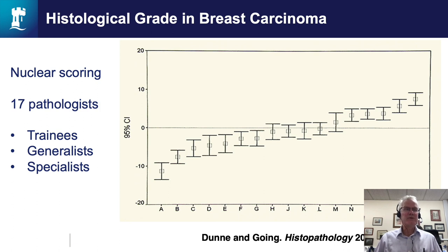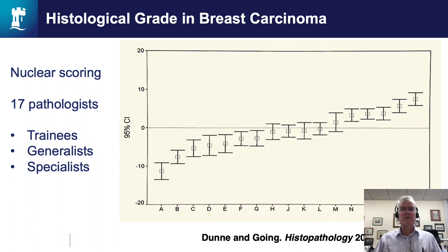A breast pathologist in Glasgow, James Goeing, carried out a study looking at whether there were differences between pathologists in the allocation of nuclear grade scores in breast cancer grading. They studied 17 pathologists, sending them a large series of images of normal epithelial cells and tumor cells from the same cases. The distribution appeared potentially random, with some pathologists typically scoring higher nuclear grade versus others scoring lower for the same case. However, they were able to show that pathologists allocating lower scores were trainees, those allocating middle-range scores were general pathologists, and those allocating high scores were specialist breast pathologists. My advice to trainees: if you're debating whether a case has a nuclear score of 2 or 3, a breast specialist is likely to score it as 3.